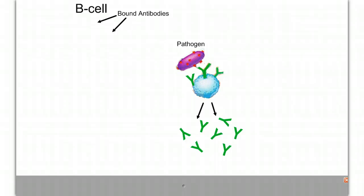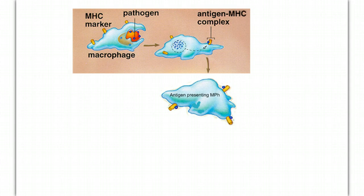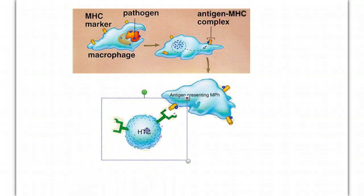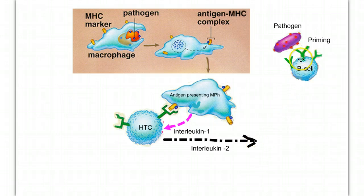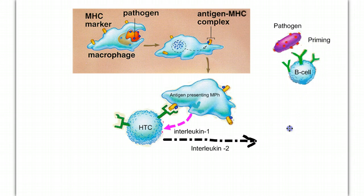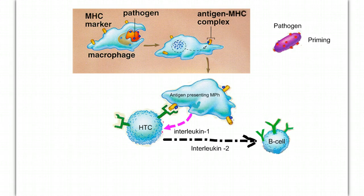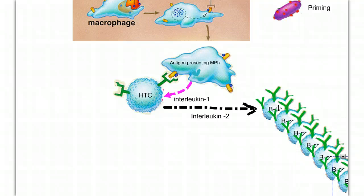The helper T-cell needs to hear from a macrophage that there's been an invasion. A macrophage has engulfed and processed a pathogen, putting the antigen on display alongside its MHC marker, becoming an antigen-presenting macrophage. A helper T-cell takes notice and binds to the macrophage. The macrophage secretes interleukin-1, and in response, the helper T-cell secretes interleukin-2. This interleukin-2 sends a signal to a B cell that's already been primed, having already interacted with the pathogen. That primed B cell receives the interleukin-2 signal, initiating a series of cell divisions that give rise to a massive army of B cells designed specifically to fight off this particular infection.